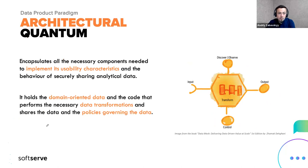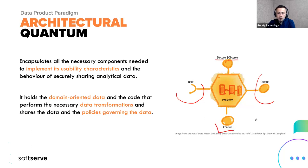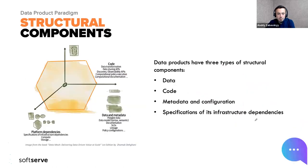A data product is the so-called architectural quantum, as coined by Zhamak Dehghani. A data product is a kind of puzzle piece in the world of data mesh architecture. To make a complete picture from these puzzles, we need to understand the input and output ports — how communication goes between data products — which is really important, as well as discoverability and observability to understand how things are going inside the data product and control it via the common data platform.